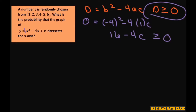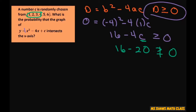To get 16 minus 4c greater than or equal to 0, our numbers would have to be elements of the set less than or equal to 4. So we'd have to choose 4 out of the 6. Because if you plug in 5, that would be 16 minus 20, which is negative — not greater than or equal to 0. Same with 6. So our total is 6, and we have 4 valid numbers. That reduces to 2 thirds.